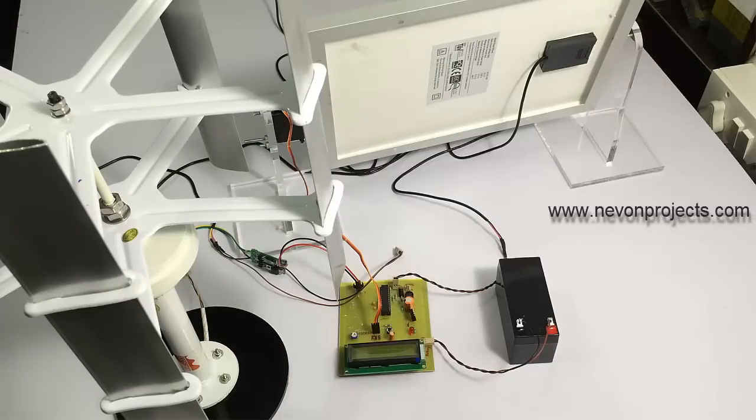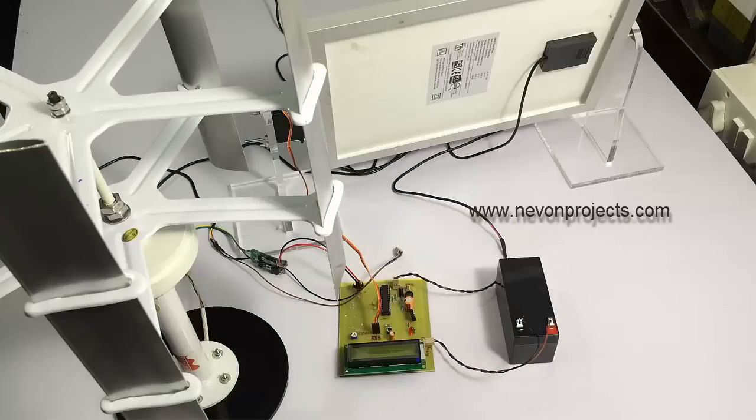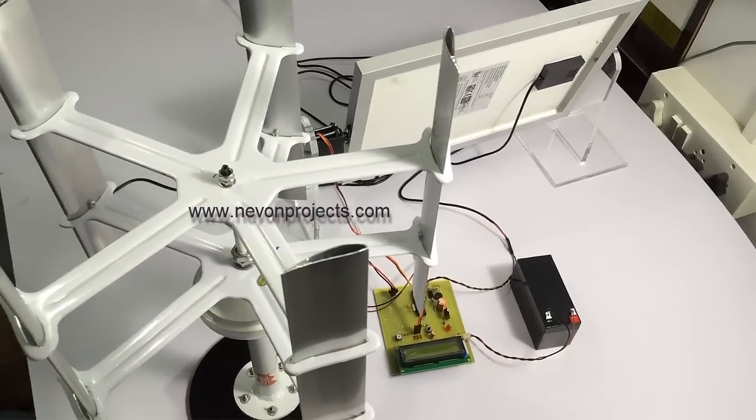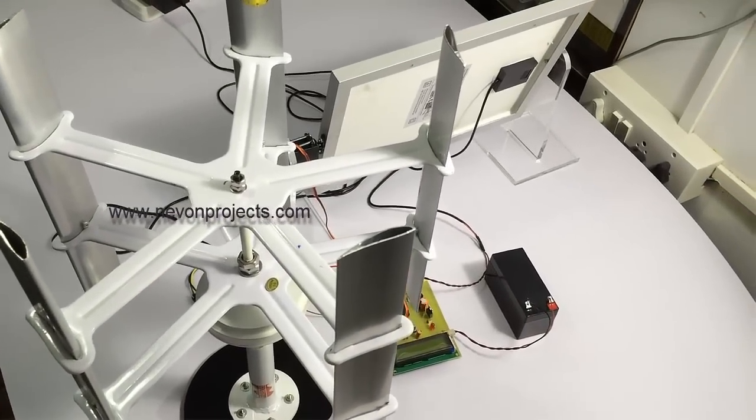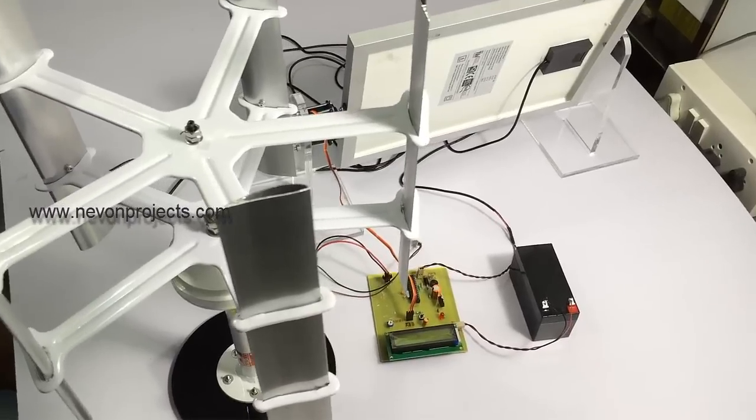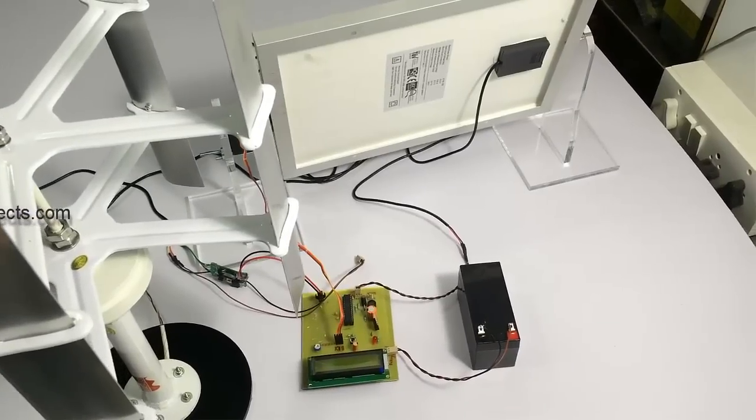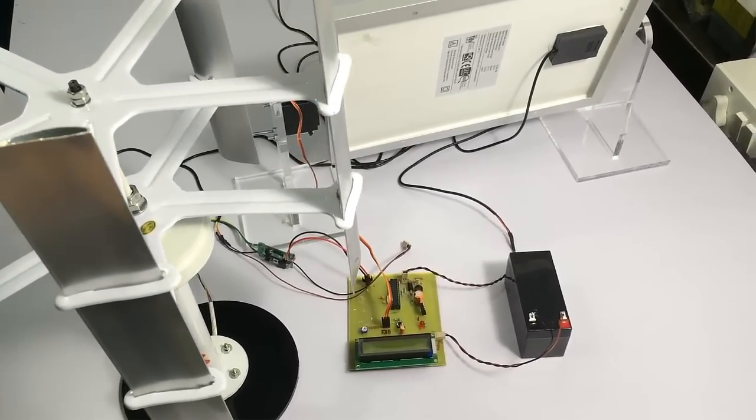We have a 10 watt solar panel and a mini windmill here - vertical windmill for efficient power generation. We have a circuit here which gets the energy from both these sources and then uses it to charge the battery, which is a 12 volt battery.